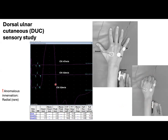There will be situations where you cannot get any response. If that's the case, check everything again, but remember that the radial nerve branches may also supply the DUC territory. To exclude this possibility, we have to stimulate the distal radiosensory nerve while recording over the DUC.